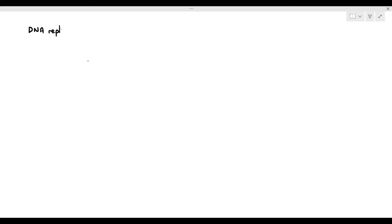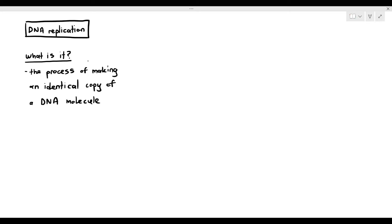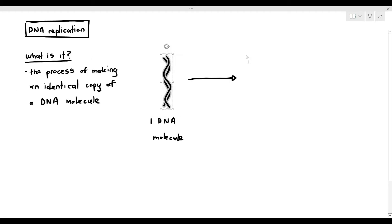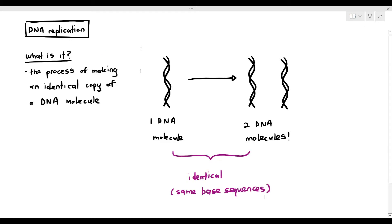For this part of the video, we are going to be looking at something known as DNA replication. DNA replication is basically the process of making an identical copy of a DNA molecule, where you have one DNA molecule and suddenly you have two DNA molecules. The DNA molecules are identical in that they have the same base sequence.